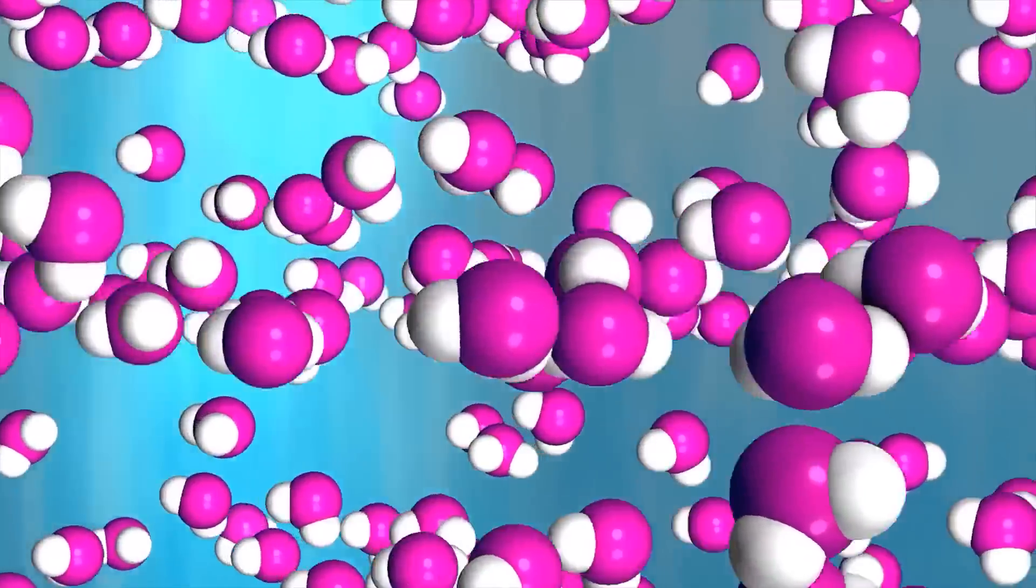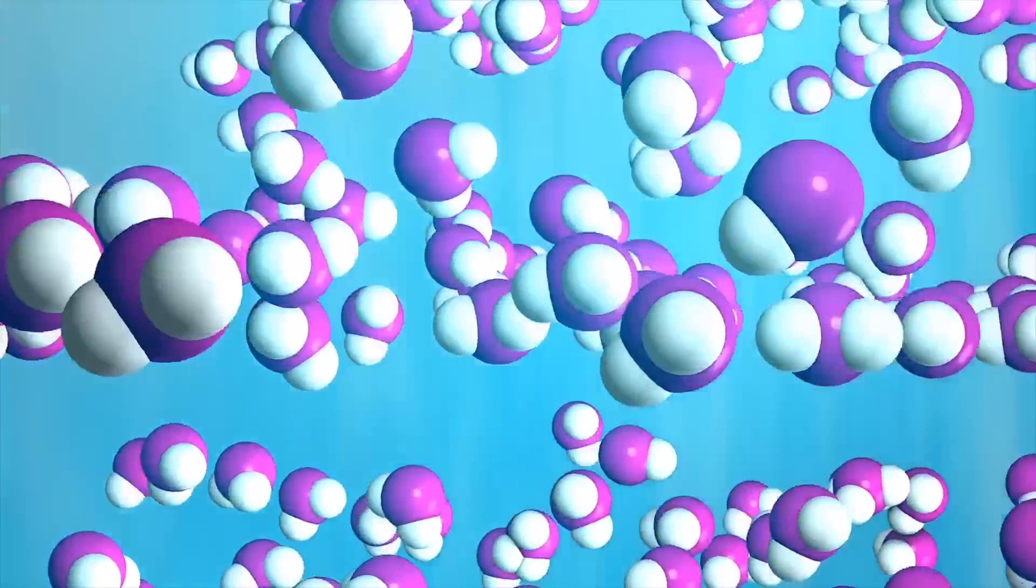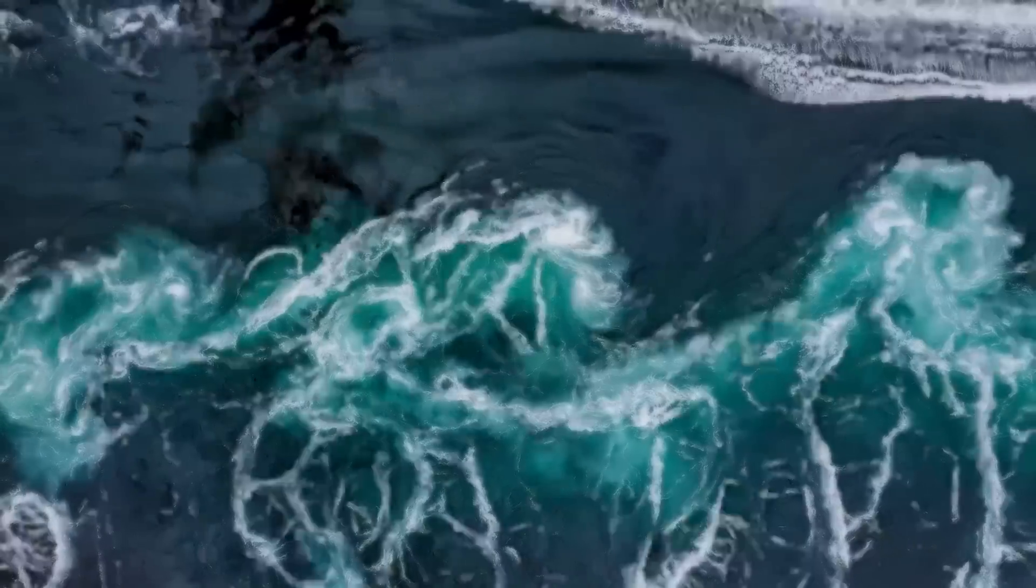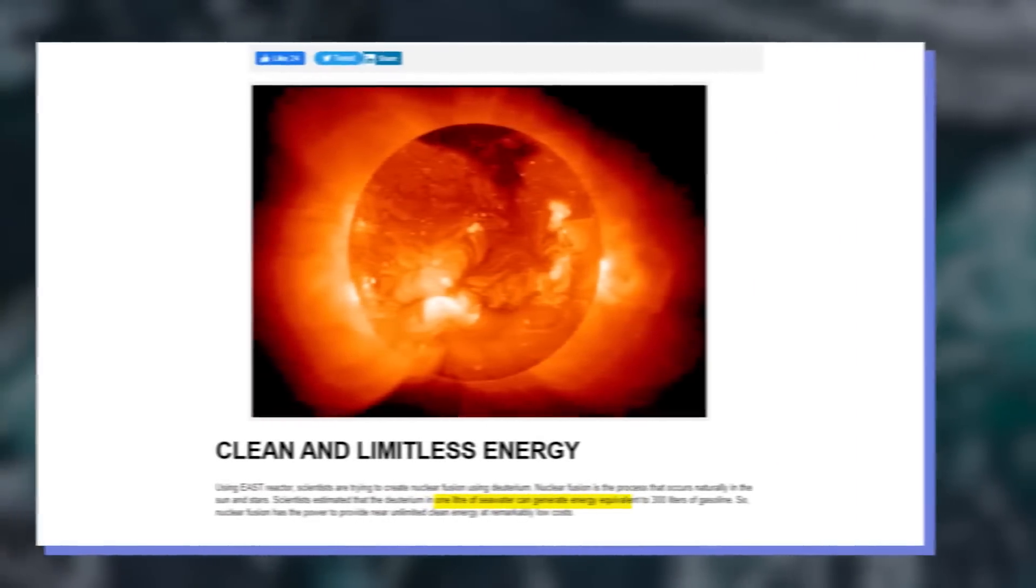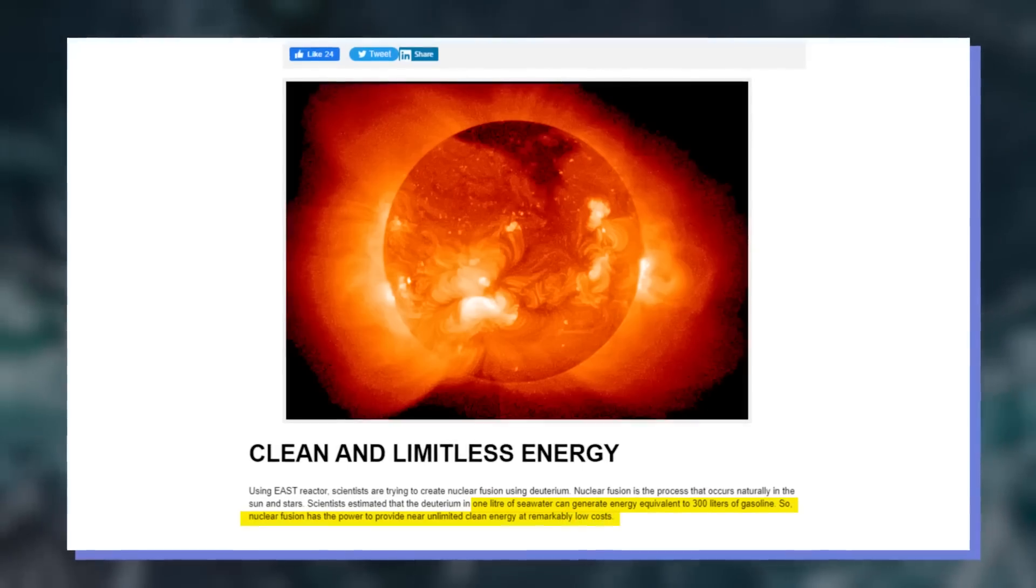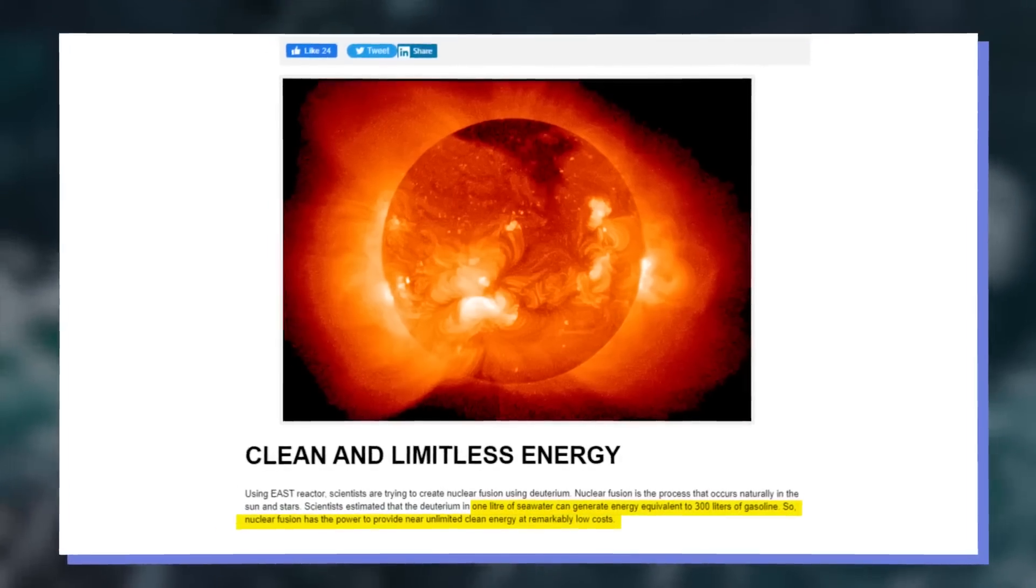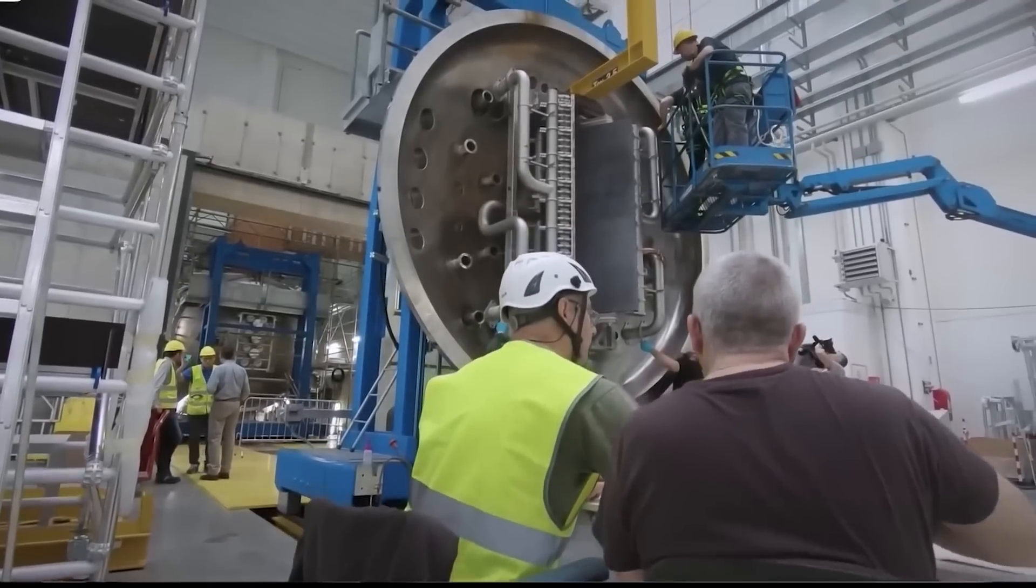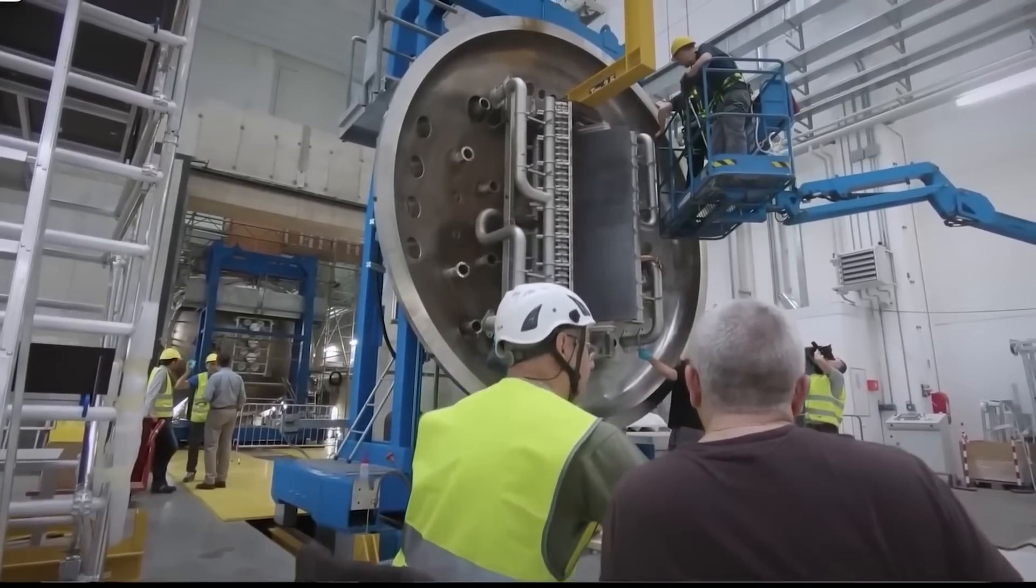In theory, deuterium, which contains heavy hydrogen atoms, can be obtained from Earth's oceans. One liter of seawater is estimated to have enough fusion material to produce energy equivalent to 300 liters of gasoline, so we can get an unlimited supply of energy from China's artificial sun.